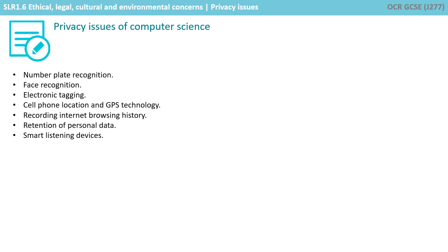A quick recap of the ways in which computer systems may cause privacy issues includes: number plate recognition, face recognition, electronic tagging, cell phone location and GPS technology, recording internet browsing history, retention of personal data, and smart listening devices, just to name a few.